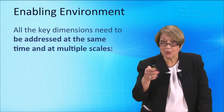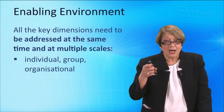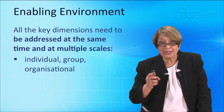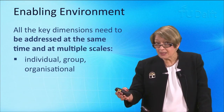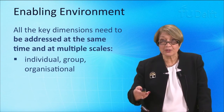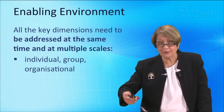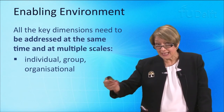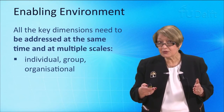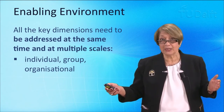We need to address them all at the same time and at multiple scales. What do I mean by multiple scales? What does an individual need to address them? What does a group need? What does the organisation need? Do we need new resources? Do we need different skills? So an enabling environment is something that is evolving and co-evolving with this changing external environment, and it is these conditions that we have to set up to keep on addressing our complex problem.